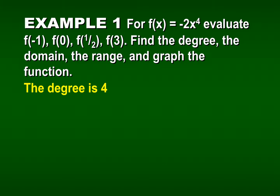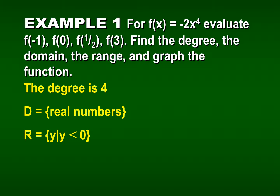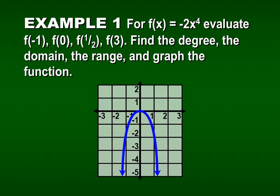The degree is 4, because that's the power of our monomial. The domain is all real numbers — there are no limitations left or right. However, on the range, our y-values are always going to be less than or equal to 0; we never get a positive y-value. The graph looks like a parabola that's been flipped upside down, and it has a line of symmetry across the y-axis.